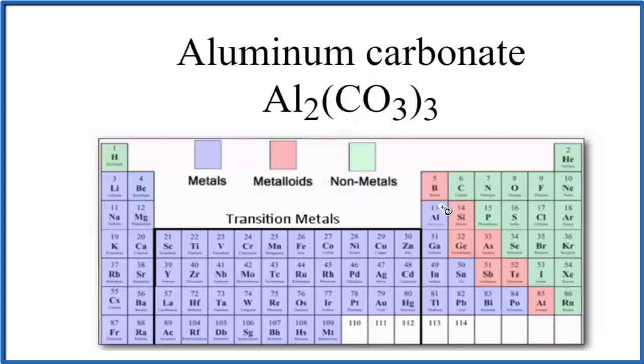As we look on the periodic table, here's aluminum—that's a metal—and then carbon and oxygen, both nonmetals. So we have a metal and two nonmetals.